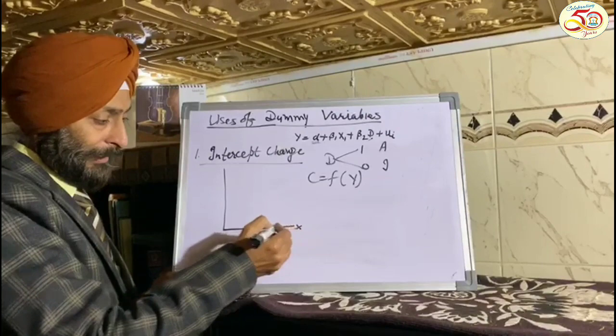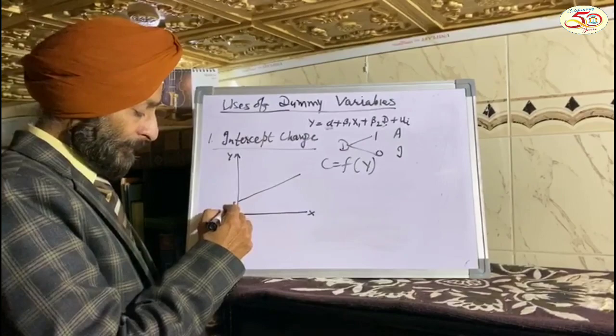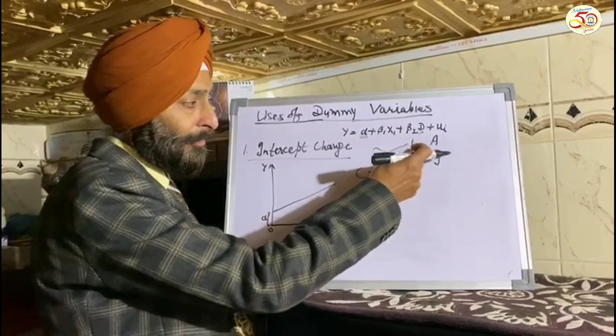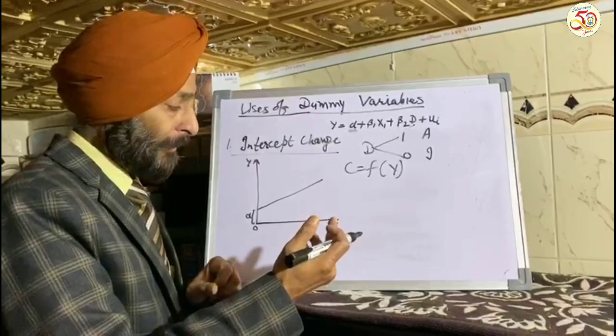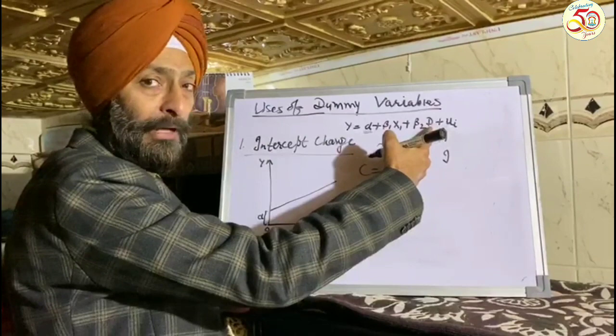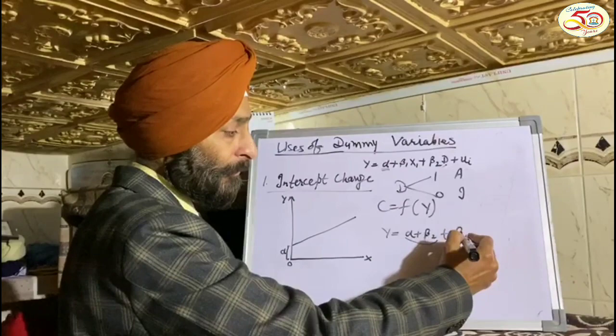Now, if we plot it on a diagram with X and Y variables, we get the consumption function with alpha as the intercept. If the dummy variable D is allotted value 1, that is in the case of an American consumer, then the model becomes Y = (α + β₂) + β₁X₁ + uᵢ. Because D is 1, β₂ is added to alpha, making (α + β₂) the new intercept.